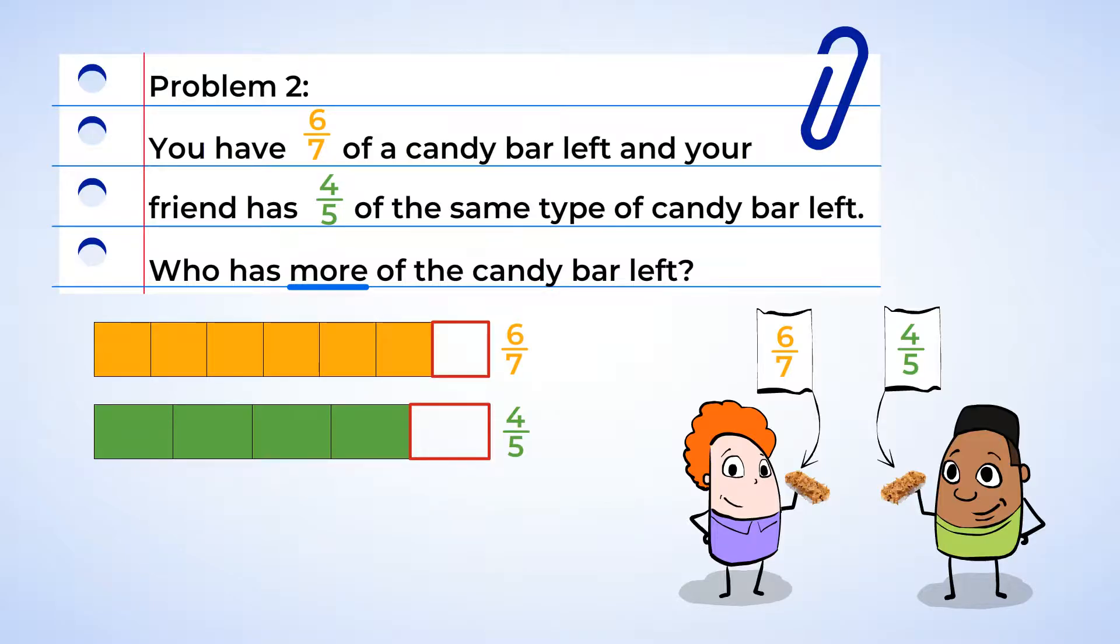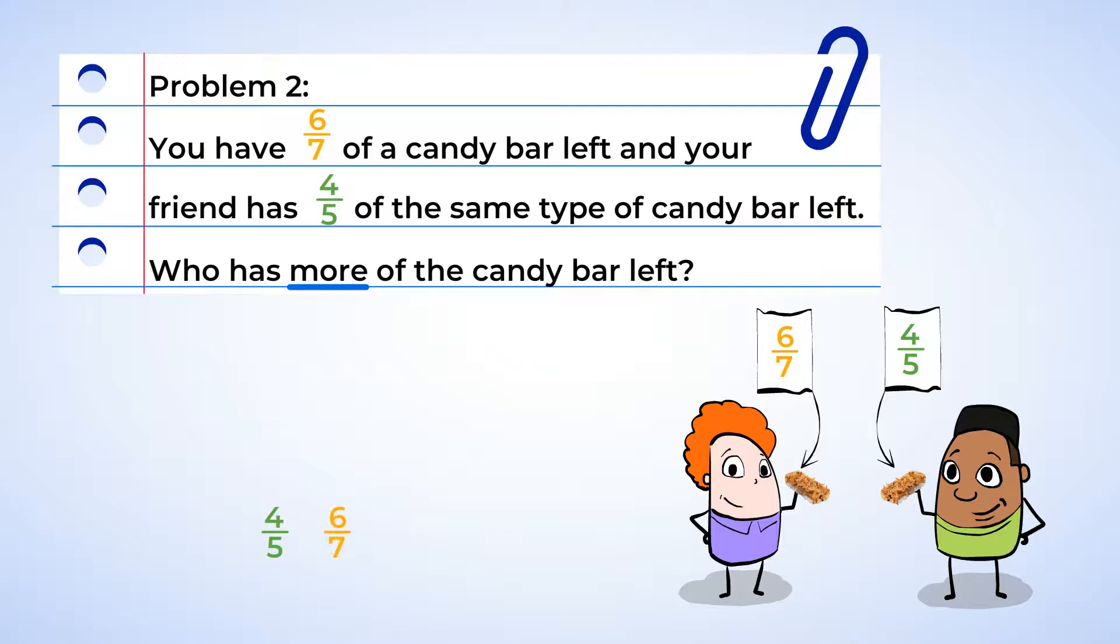When two fractions are both missing one piece, the fraction with the larger denominator will have less missing and will be greater than the other fraction. Without drawing it out, compare the fractions four-fifths and six-sevenths. Both of these have one piece missing. And since six-sevenths has the larger denominator, it will have less missing and be larger overall. Therefore, four-fifths is less than six-sevenths. You are on a roll.